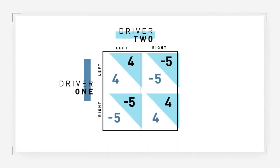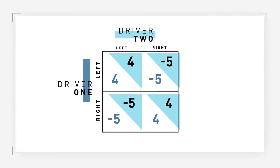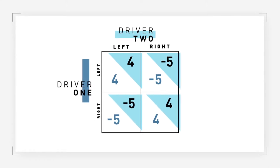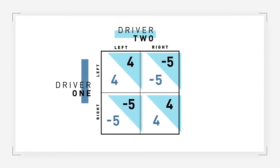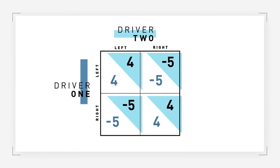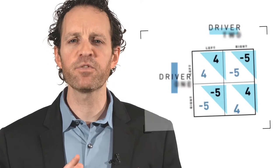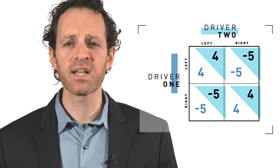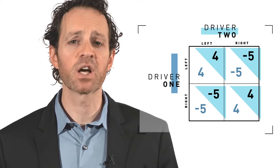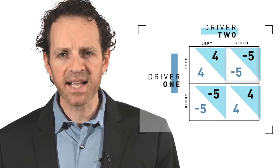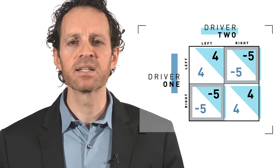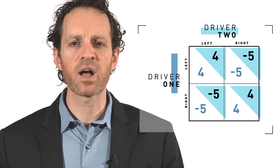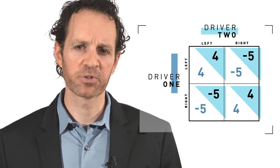This coordination game can be illustrated in a payoff matrix. The strategies for driver one are represented in the rows, and those of driver two in the columns. Driver one's payoff is listed first, and driver two's is listed second. The specific payoffs don't matter and are meant to illustrate the relative attractiveness of each option. The negative payoffs capture the fact that if the players fail to coordinate, they'll have an accident, which harms both drivers.